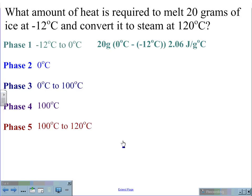The calculation for this looks like this: 20 grams times the quantity of 0 minus a negative 12 degrees Celsius times a specific heat of 2.06 joules per grams degrees Celsius. This gives us a value of 494.4 joules.